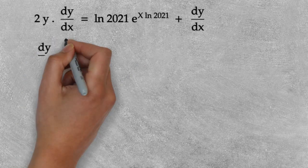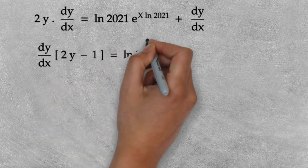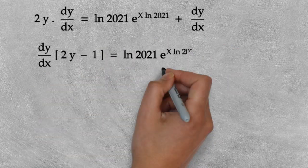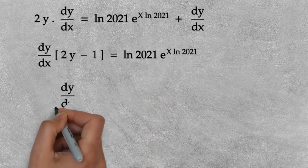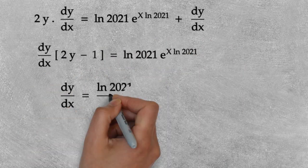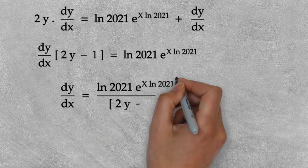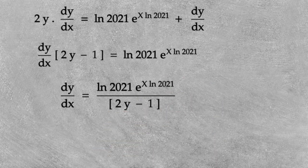Bring dy/dx to the same side. So dy/dx equals ln(2021) times e to the x·ln(2021) power, divided by (2y minus 1).